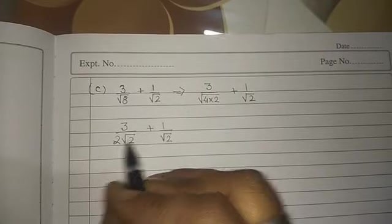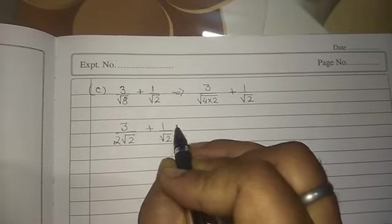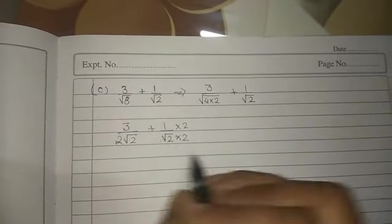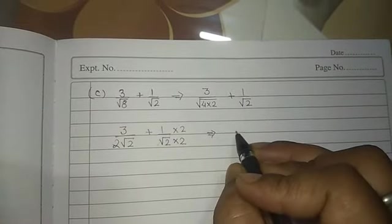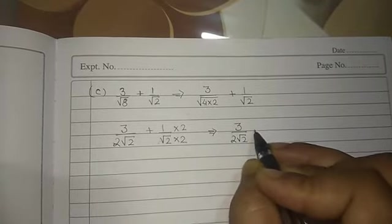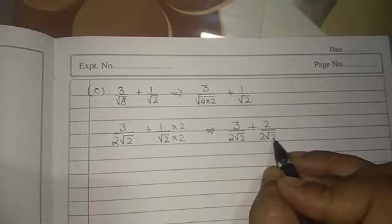Now here 2 is present and here 2 is missing. So what we have to do, we have to multiply it by 2 and 2. So the 2 will also come here and we can take it as a LCM. So 3 upon 2 root 2 plus 2 upon 2 root 2.